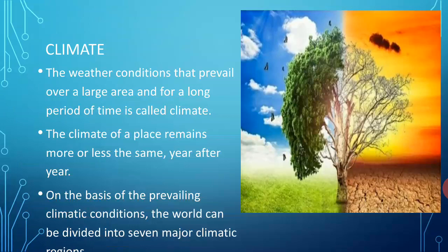The weather conditions that prevail over a large area and for a long period of time is called climate. The climate of a place remains more or less the same year after year. Different parts of the world have different types of climate.